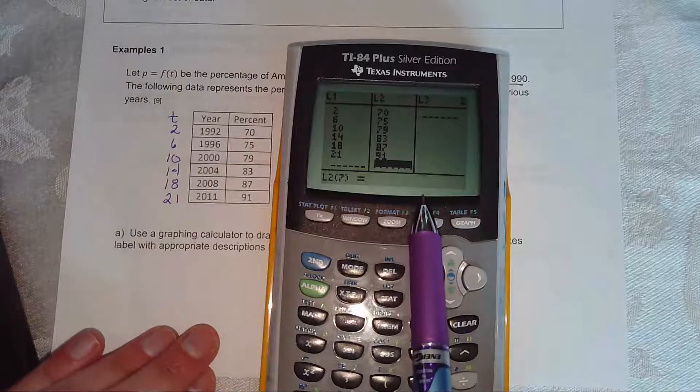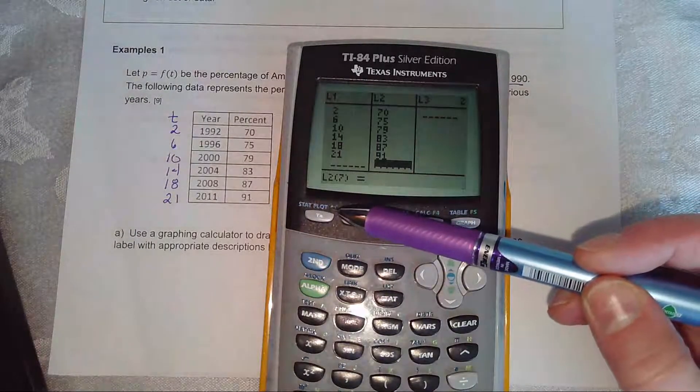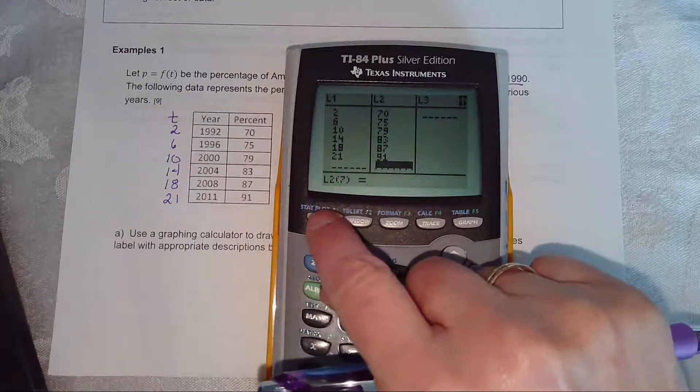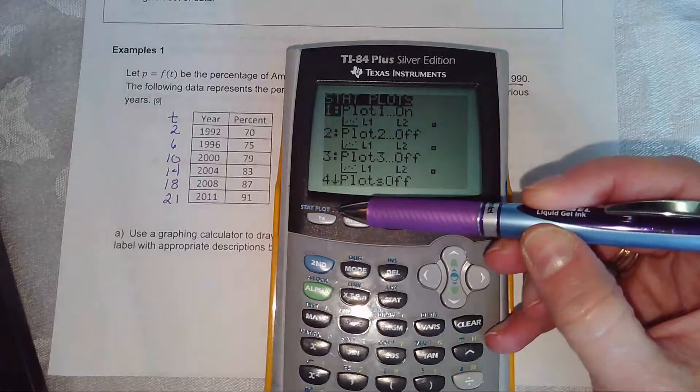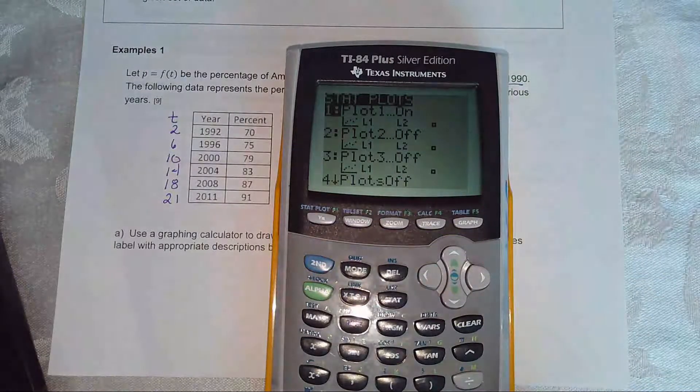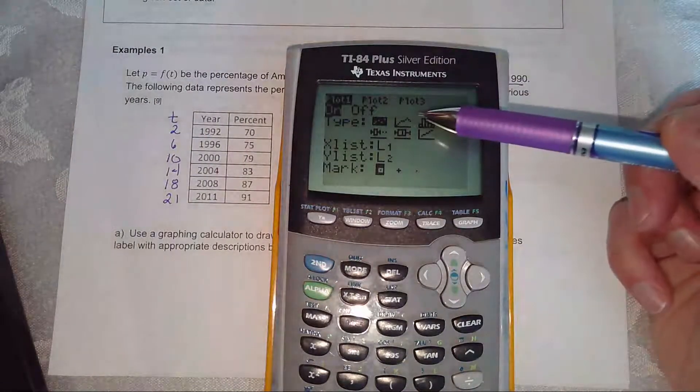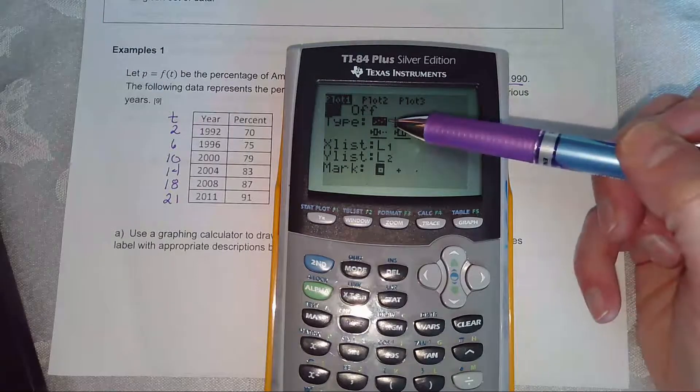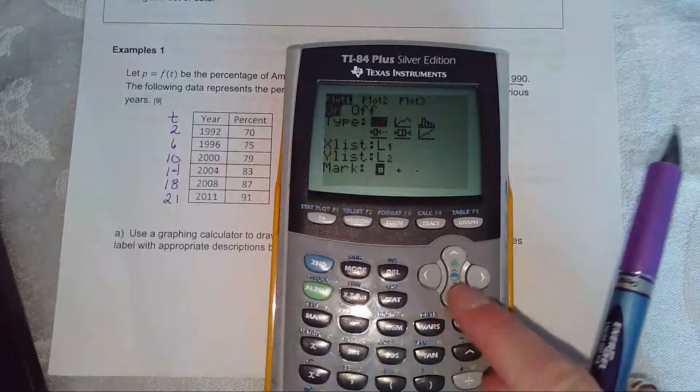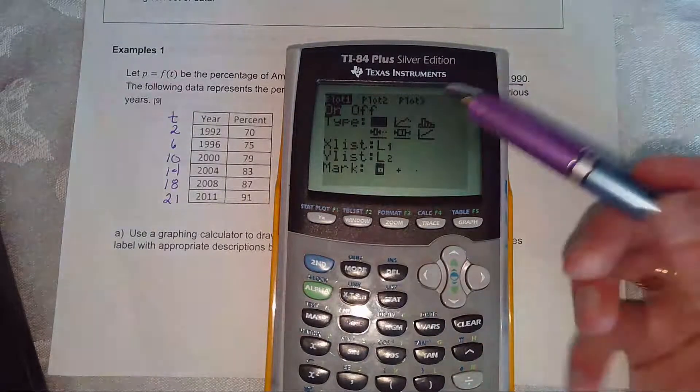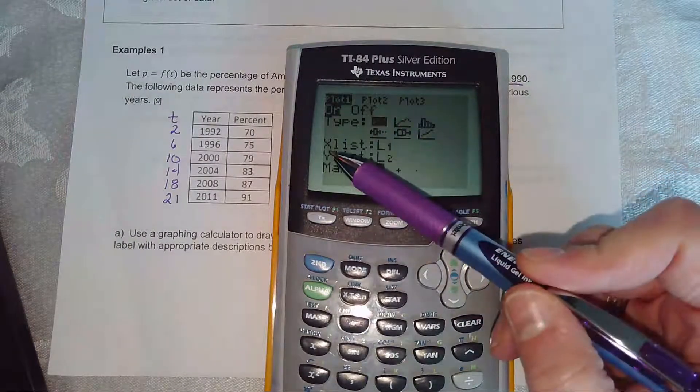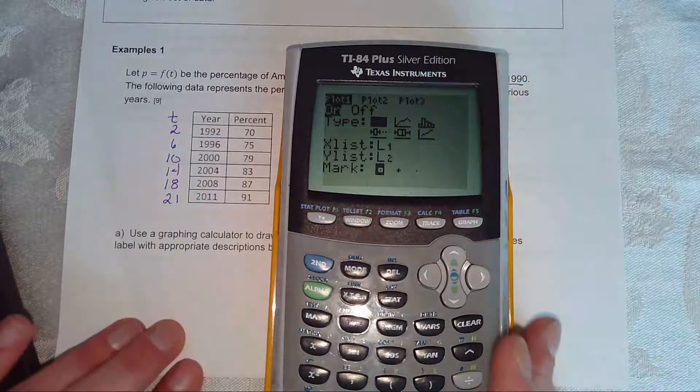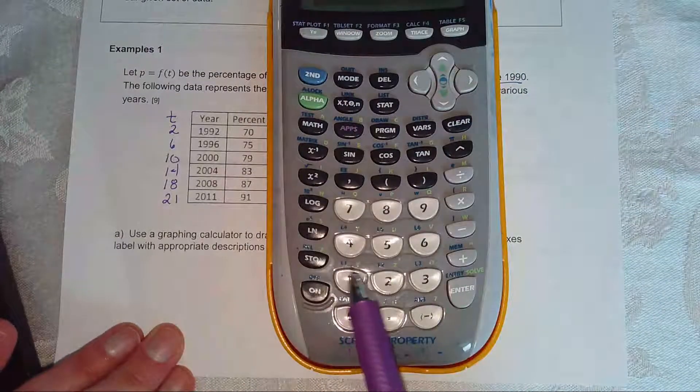So to plot this set of data, we're going to use what's called stat plot. It's right above the y equals. It's in blue. So I'm going to hit the second y equals key. And so hitting the blue key tells the calculator you want the blue option above that key. And we're going to turn one on. So I'm going to hit enter twice. Now there's a lot of options of drawings that you can do on your calculator. Histograms, box and whisker displays, but we want the first one highlighted. So use your arrows to navigate through the calculator and just hit enter on the very first option. And then our input value or our x list is in L1 and the y list is in L2. If they don't say L1 and L2, you can find those above the 1 and the 2.